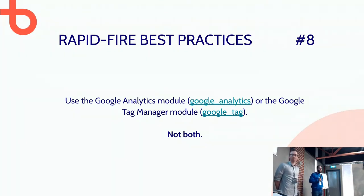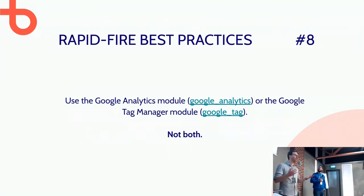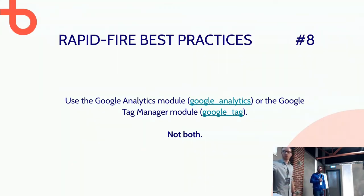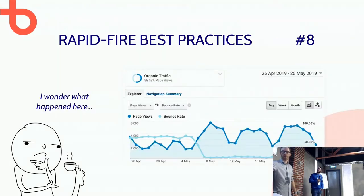Another important thing: either use the Google Analytics module or the Google Tag Manager module to set up Google Analytics tracking — don't use both. Because sooner or later you'll have duplicate page views, and often after months the client says it looks like they have a lot of page views but they're all duplicated, meaning they had half the traffic they thought. In our experience, Google Tag Manager is the most useful, but you're free to use anything.